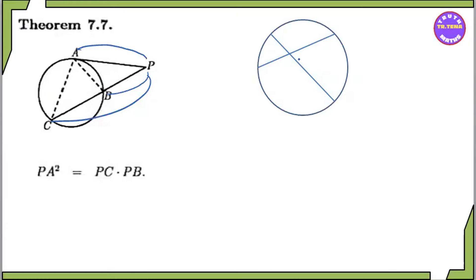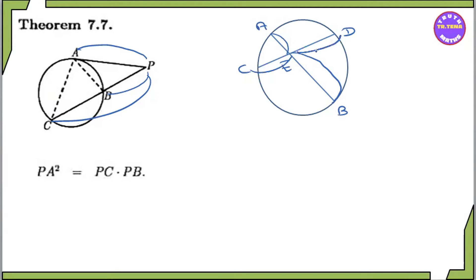So, A squared equal to A, B, C, D. So, A squared equal to A, B, C, D. So, A squared equal to A, B, C, E, N, E, D.